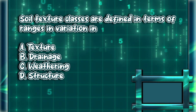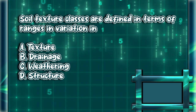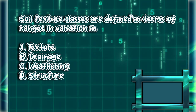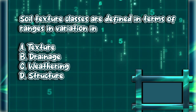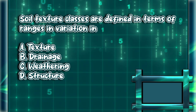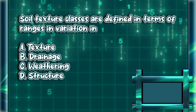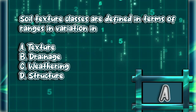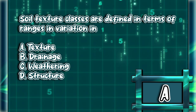Soil texture classes are defined in terms of ranges in variation in: A. Texture. B. Drainage. C. Weathering. D. Structure. The answer is letter A.